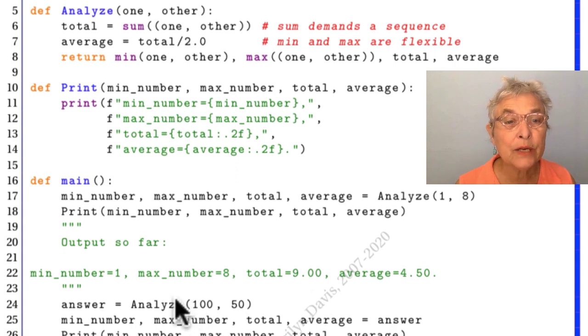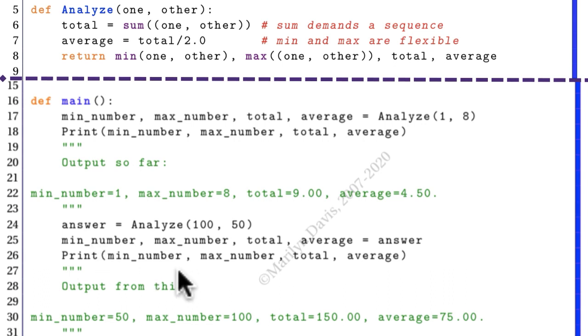Now we're going to do it again, but this time we're going to collect the answer from analyze all into one identifier. Answer. But that has within it four different values. So we can put it on the right-hand side of the equal sign. And on the left-hand side, we have those four identifiers. And the answer, which is really a tuple, gets unwrapped. So each of the values gets the assignment into the identifier positionally. That's good. And we see that that worked just right.